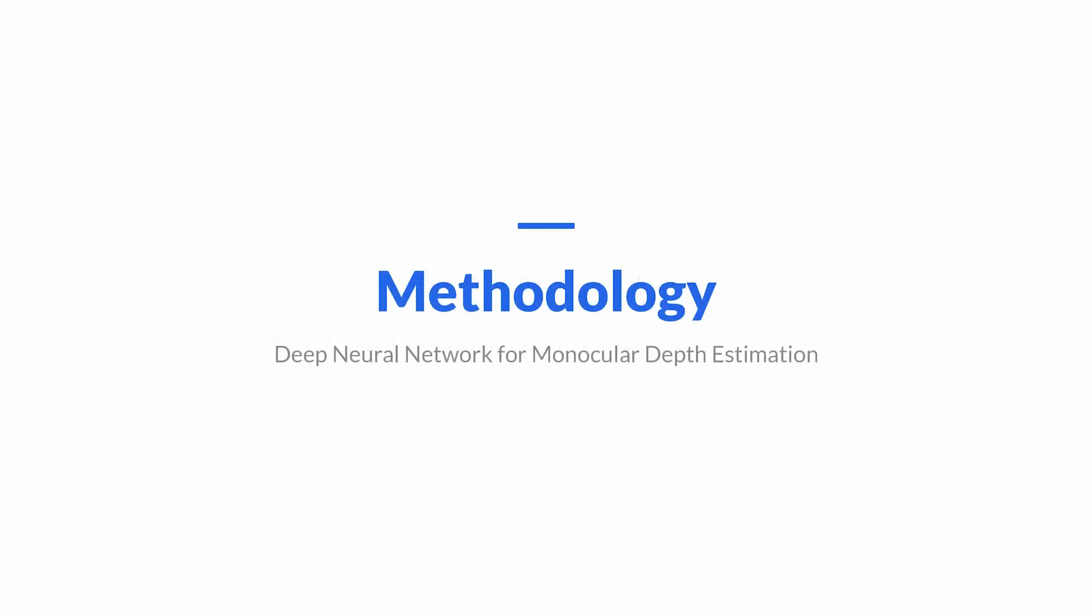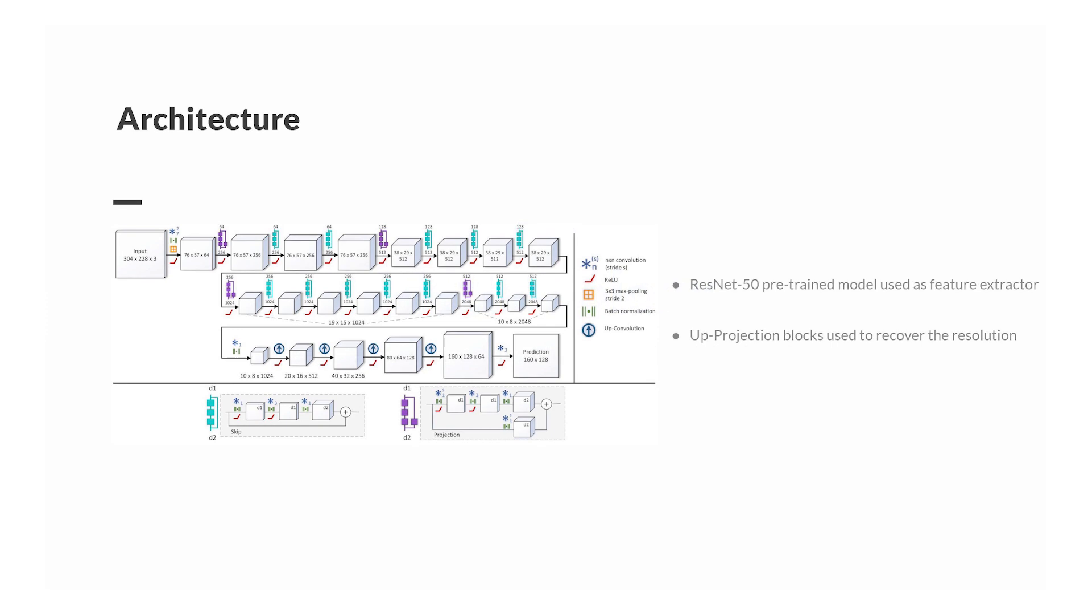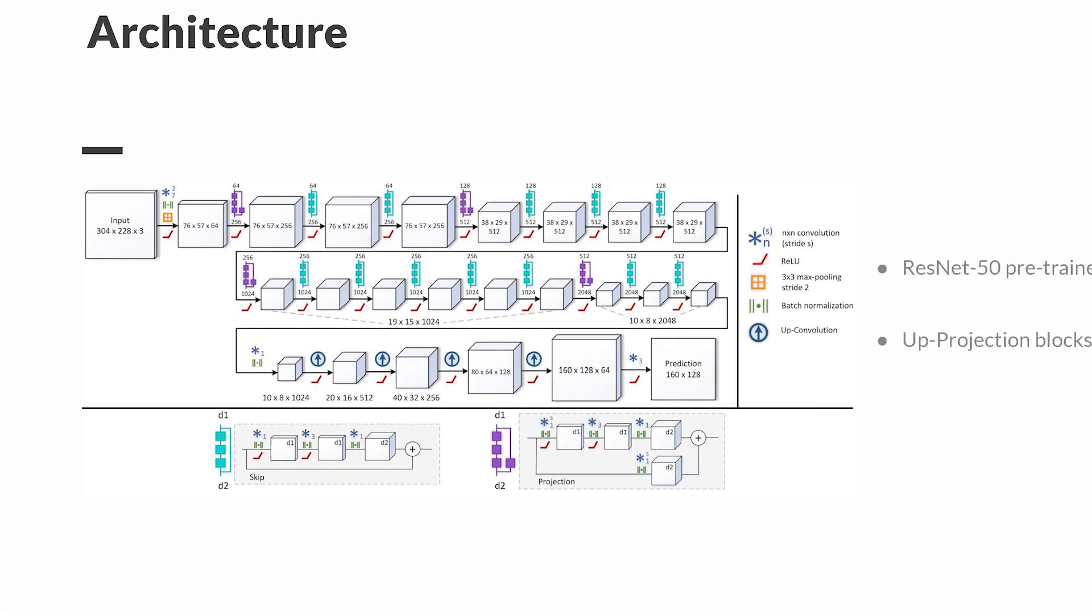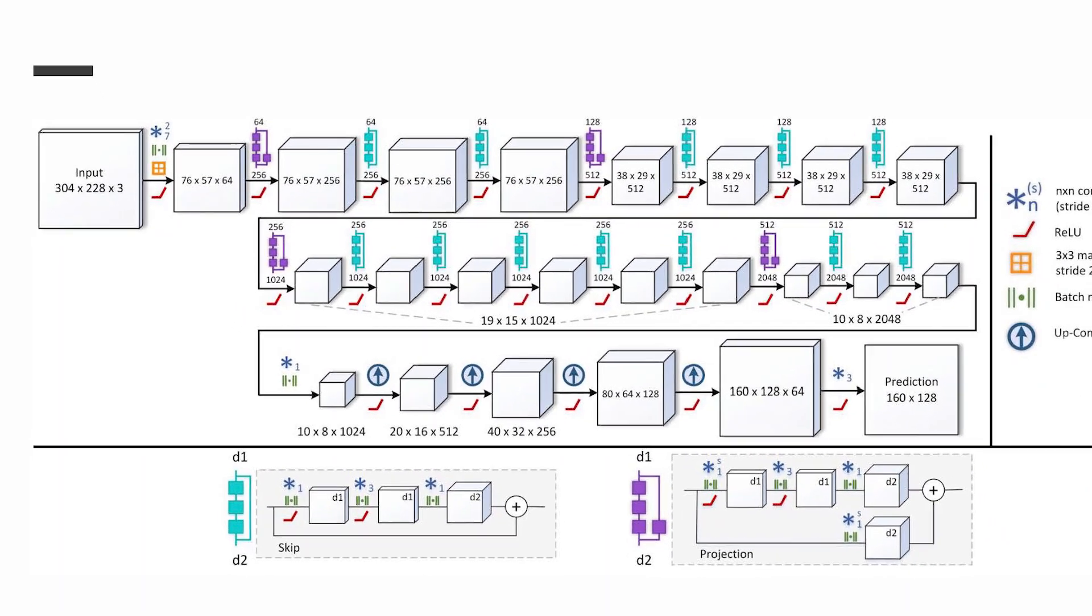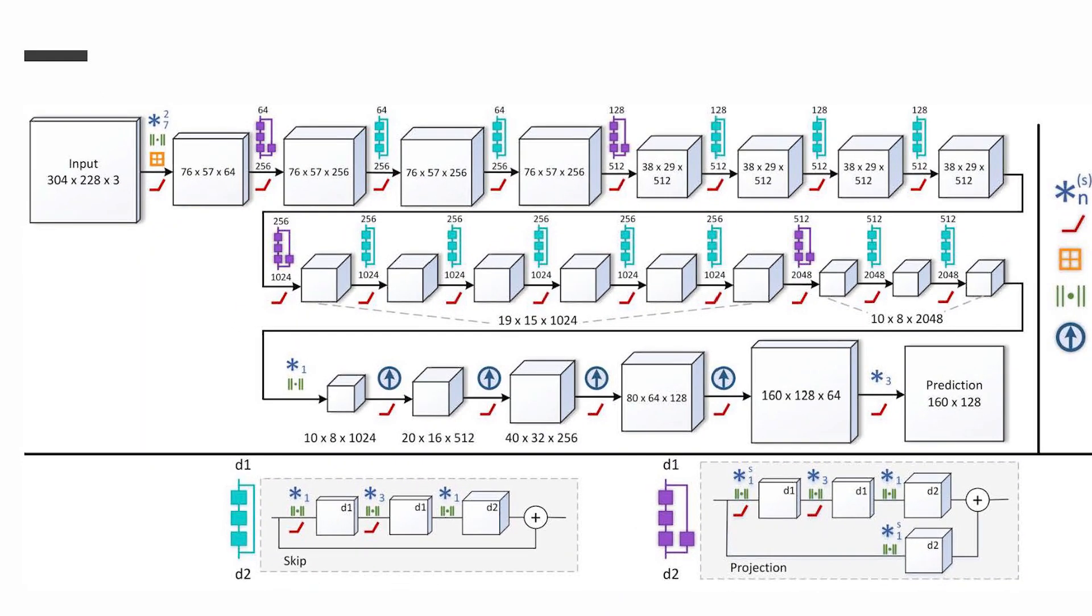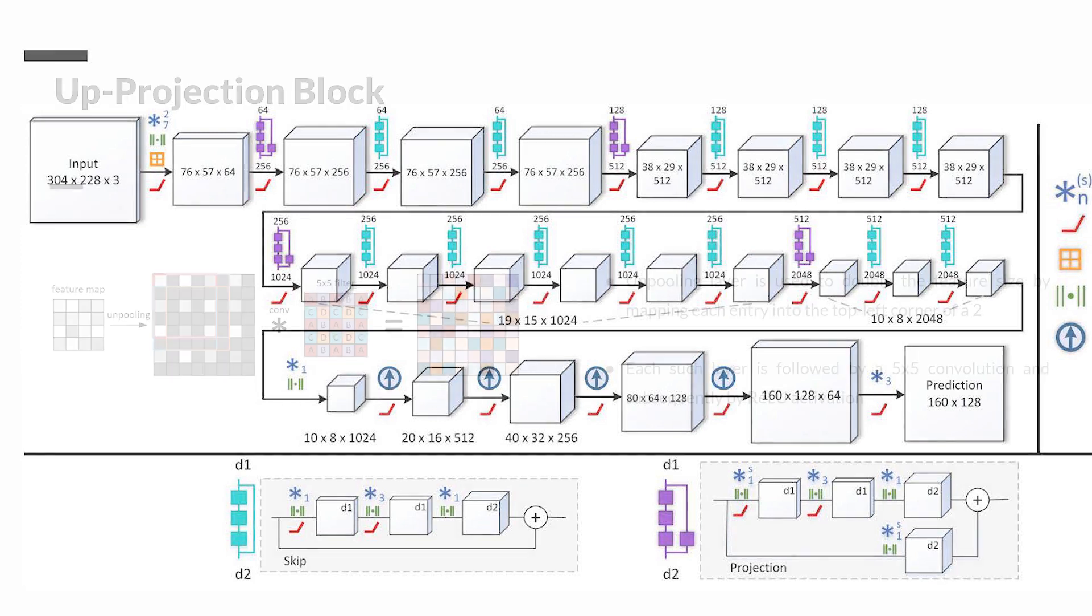Now let's talk about the methodology that we used in this project. This is the overview of the architecture. It mainly contains two parts. The first part is the modified ResNet-50 model, which extracts the features from the input RGB image.